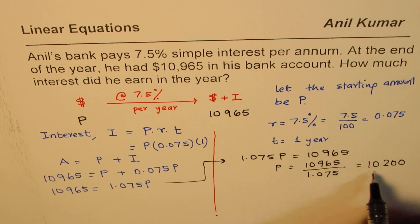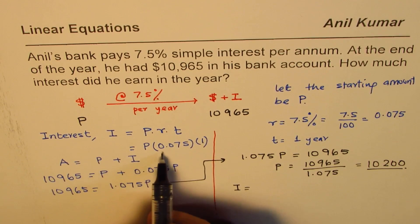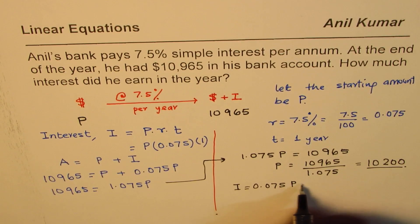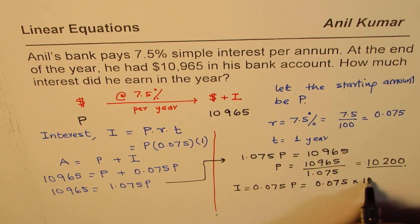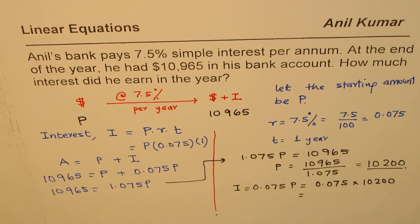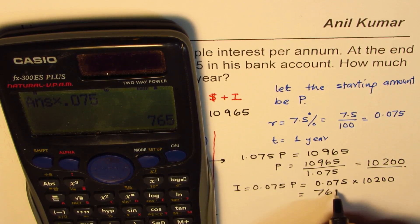So, the interest is how much? You know the principle now is this much. So, interest as you know is 0.075 times the principle. So, it is 0.075 times 10,200. Which is equals to let's multiply. So, we have 10,200 times 0.075. So, we get $765.